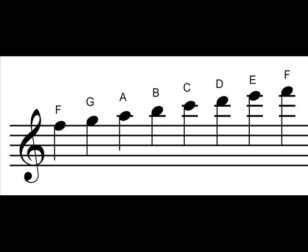Notes above the staff are added alphabetically, going up the musical alphabet, which only includes the notes A, B, C, D, E, F, and G. Moving up the musical alphabet, when G is reached, the next note will go back to A, then B, and so on.